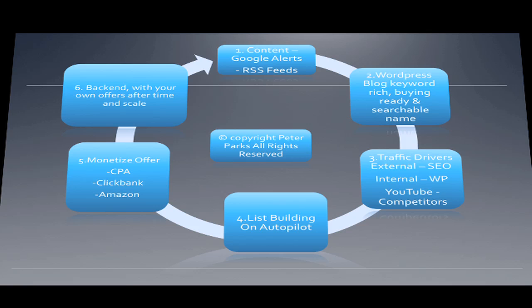Here's how you build your simple affiliate funnel. It all starts with the content — you can get your content from Google Alerts and RSS feeds. Second, you need a WordPress blog that's keyword rich, buying-ready, and searchable by name. It must be search-worthy, keyword rich, and target a buying keyword where people are ready to buy. Third, you need traffic drivers: external traffic from SEO, and internal traffic from WordPress communities and your YouTube competitors.